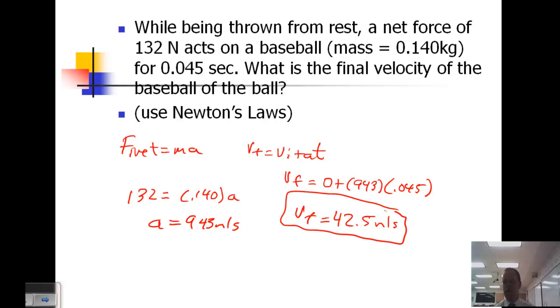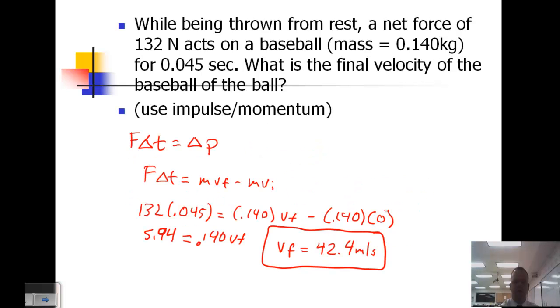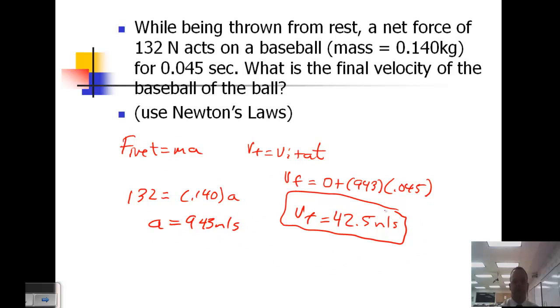Now we can solve for V_final: 0 plus 943 times 0.045, and we get 42.5 meters per second. So the same problem, one using the equations we've used previously in the course. Just a rounding difference - we get the same answer. Now we've used Newton's laws versus impulse momentum. If the problem specifies which one you must use, you should do the one that's specified. Otherwise, you can use either method.